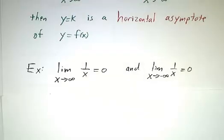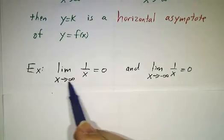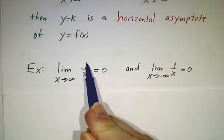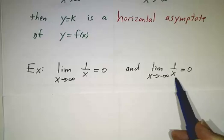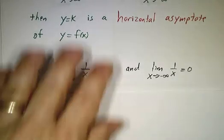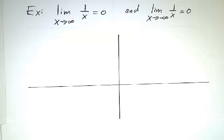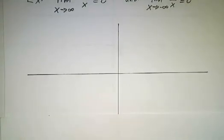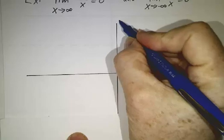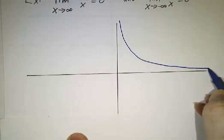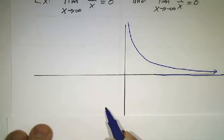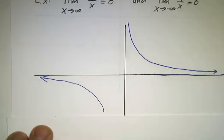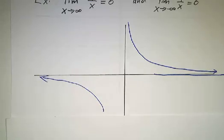A simple example is the function 1 over x. If x is a big positive number, then 1 over x is very close to 0. And if x is a big negative number, 1 over x is also close to 0. So we have a horizontal asymptote at y equals 0. You don't see it because it's hidden by the x-axis, but the curve gets closer and closer to this horizontal line on both ends.